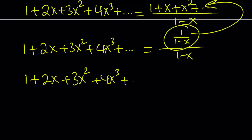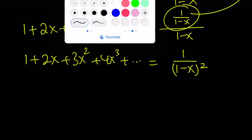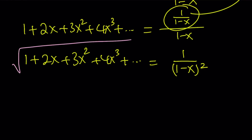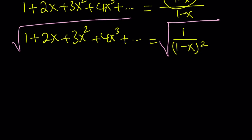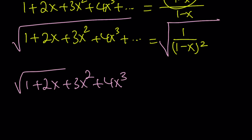We can write it as a perfect square in the denominator, bringing us to the same point as method one. Now taking the square root of both sides: since x is less than 1, the quantity 1 minus x is positive, so the absolute value doesn't change anything. Our expression — the stuff we're looking for — is going to be 1 over 1 minus x.